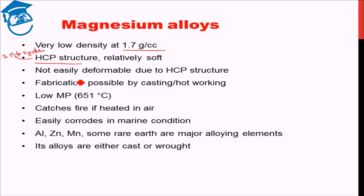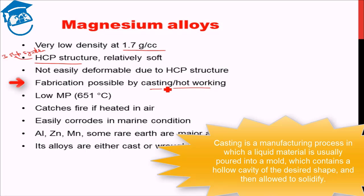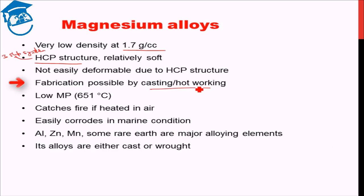The problem with its deformation leads to fabrication by casting or hot working. Casting means liquefying the magnesium alloy and casting it into the end product shape. Hot working helps because increasing the temperature leads to better deformable properties — it can be deformed more easily than at room temperature. So fabrication is normally carried out by casting or hot working.